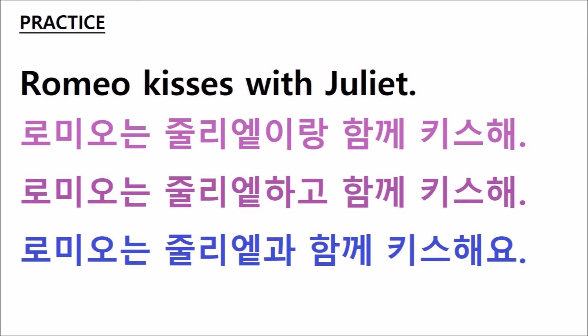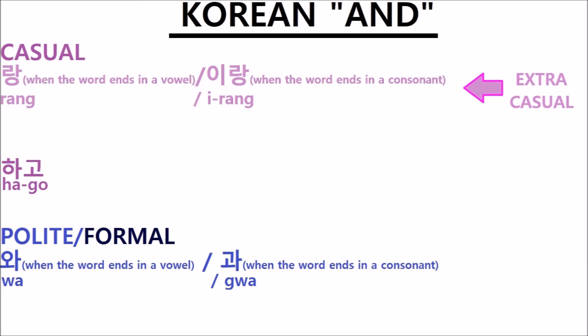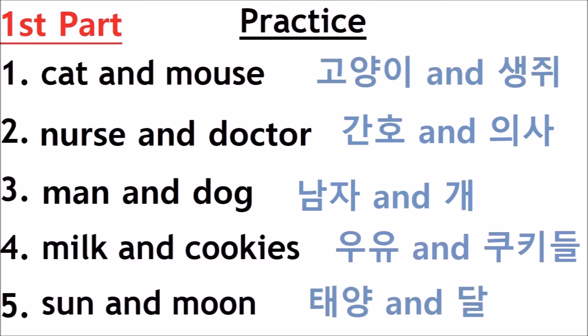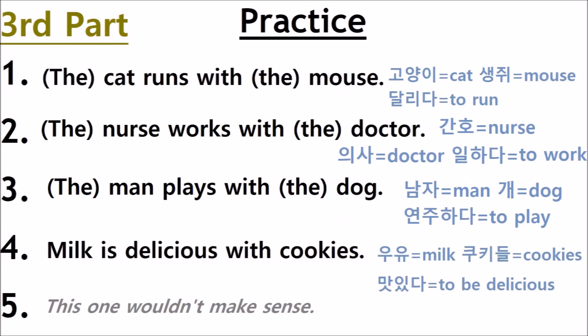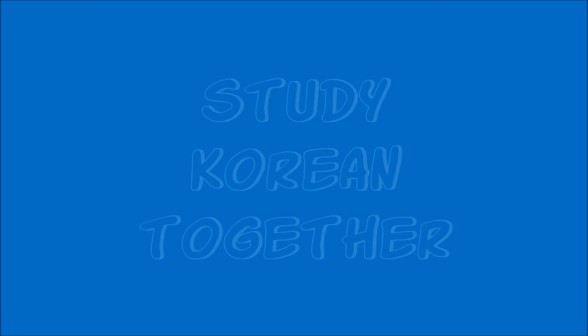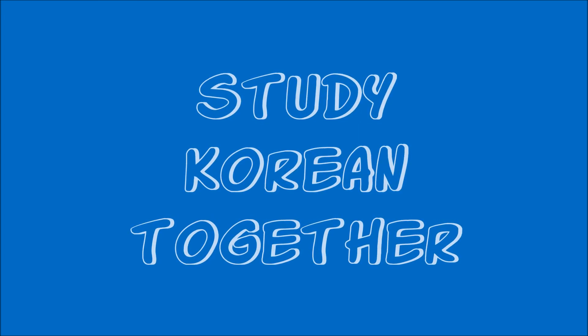Who would have thought that one little three-letter word in English would be so complicated in Korean? And we're not even done yet — the next video will teach you how to use 'and' between two verbs; it's a different word entirely. Here are a couple more examples if you want more practice using 'and'/'with.' It's also a good way to build vocabulary and practice your conjugation. The first part is just noun and noun; in the second part, you add a verb or adjective to make a sentence — remember, in Korean, adjectives are conjugated just like verbs. In the third part, you make sentences using the word 'with.' The answers are in the comment section. I hope you join me for my next video. 안녕히 계세요 (Annyeonghye gyeseyo), and thanks for studying with me.